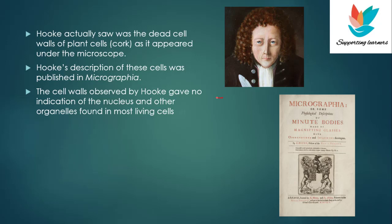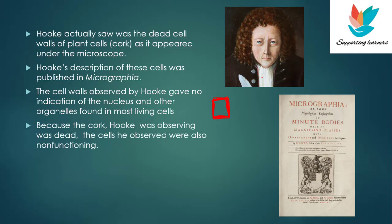Basically what Hooke observed was just empty boxes — they had a cell wall because they were plant cells. This was what he observed: empty boxes. Because the cork Hooke was observing was dead, the cells he observed were also non-functioning. So there was no nucleus, no organelles — these were dead cells and they were actually non-functioning. The cell observed by Hooke gave no indication of the nucleus and other organelles found in most living organisms.